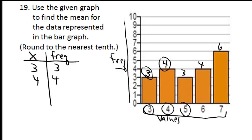The third is 5 with a frequency of 3. The next one is 6 with a frequency of 4. And the last is 7 with a frequency of 6.